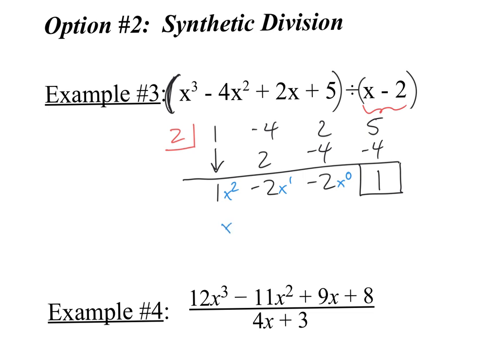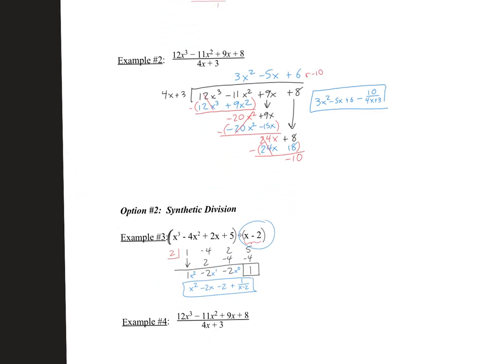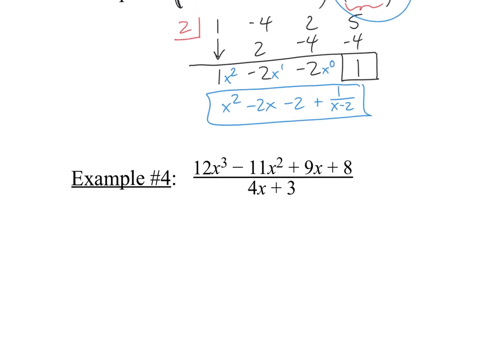The answer is x² minus 2x minus 2 with remainder 1, written as plus 1 over (x minus 2). That's the exact same answer as example 1, but done with synthetic division. My takeaway: when dividing by something with no leading coefficient other than 1, synthetic is much easier. But when there's a leading coefficient like 4, synthetic gets harder — though you may still prefer it.